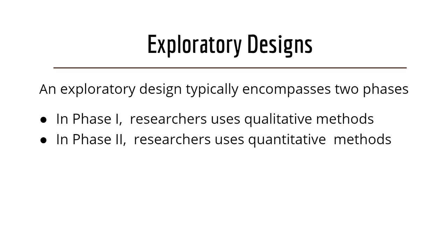Exploratory Design typically encompasses two phases. In Phase 1, as a researcher, you can use one or more qualitative methods to get a general sense of characteristics, phenomena, or issues related to your topic of study. The qualitative data — perhaps from observation, interview, or both — provide the basis for a more systematic quantitative study in Phase 2.